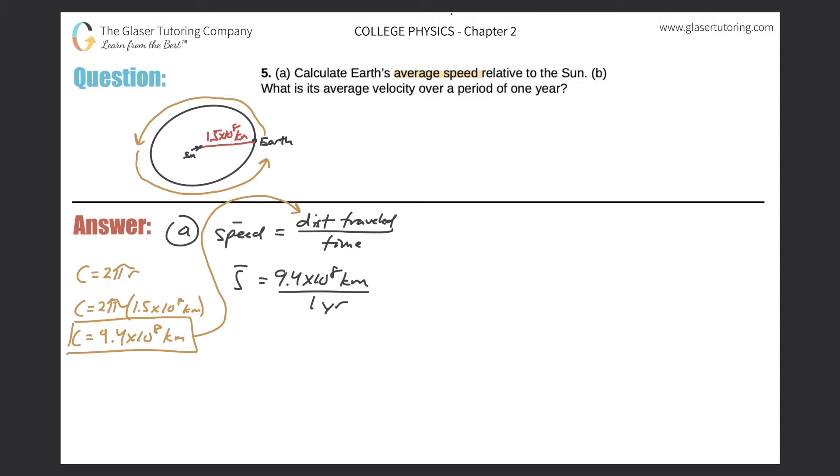Now, it doesn't ask us what units they want it in. They just said calculate the average speed. So this could be a speed. This works. If you had to find kilometers per second, we could do that. We would just have to convert the years into seconds. Why don't we do that quickly. So my job here is I want to try to convert this value into kilometers per second.